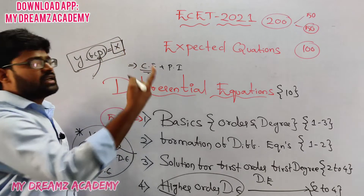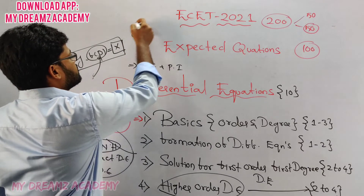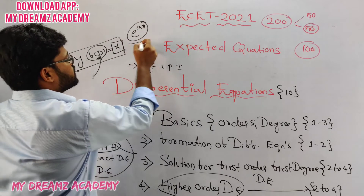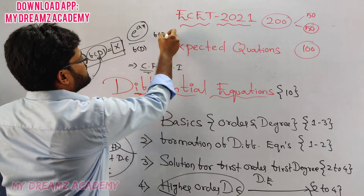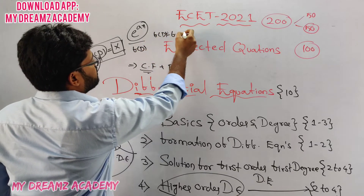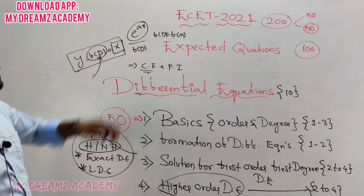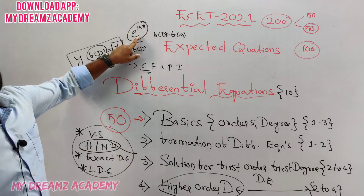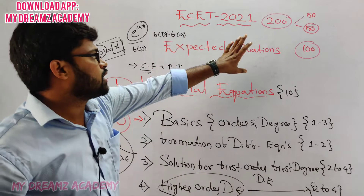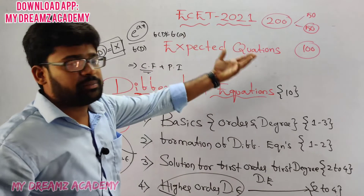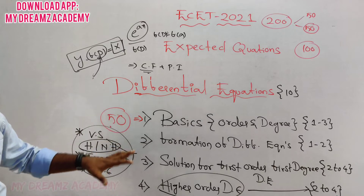For the particular integral, if the X value is E to the power of AX, you need to substitute F of D equals F of A — this is one method. If the X value is in terms of sine or cosine, that will be handled differently. This covers the entire syllabus.